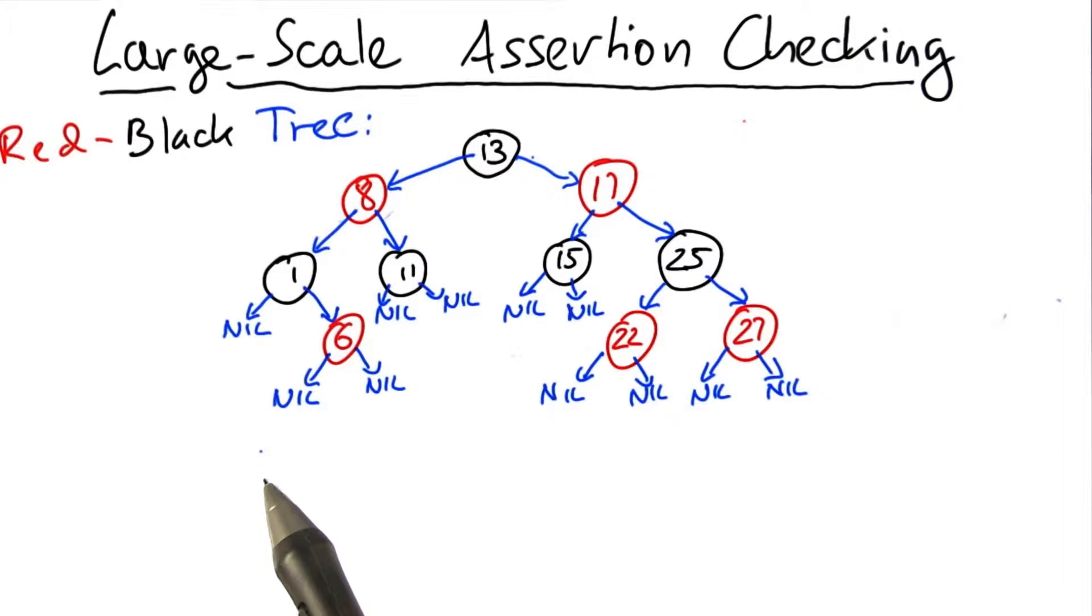Red-black trees do not only guarantee search in logarithmic time, but also insertion and deletion, which makes them a real nice choice for all sorts of search operations, but they also are very difficult to debug.